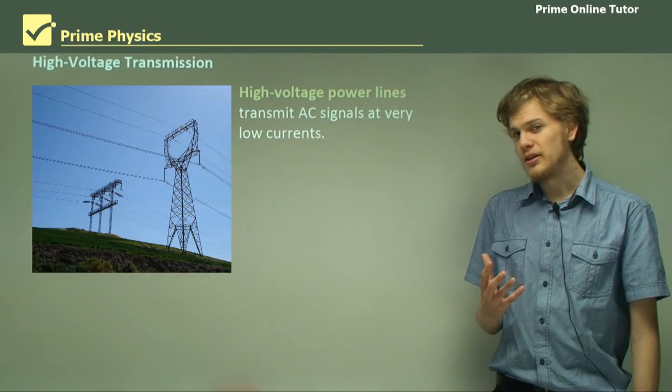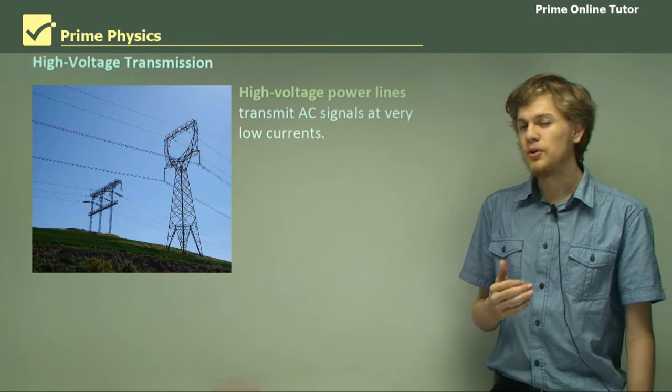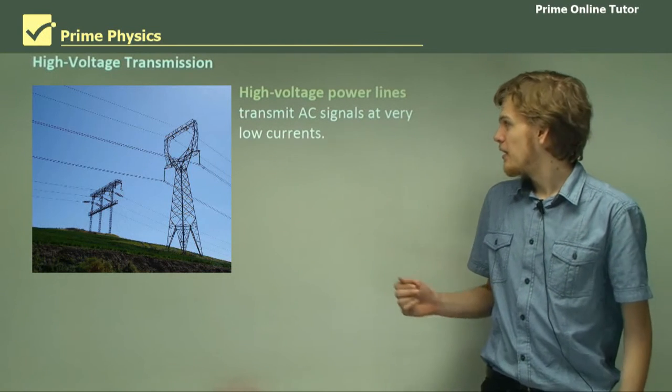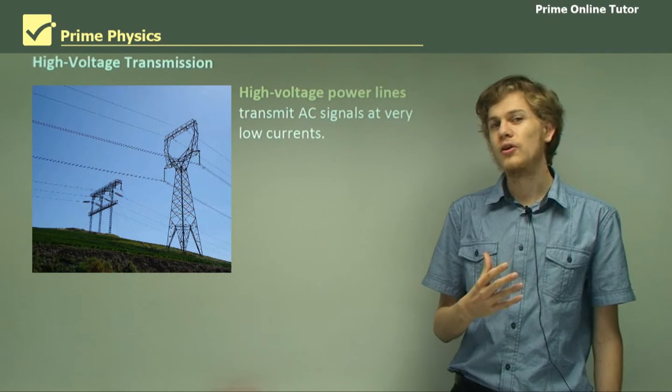High voltage power lines transmit AC signals because they've been transformed and they've been left as AC. And they transmit them at very low currents and therefore very high voltages.